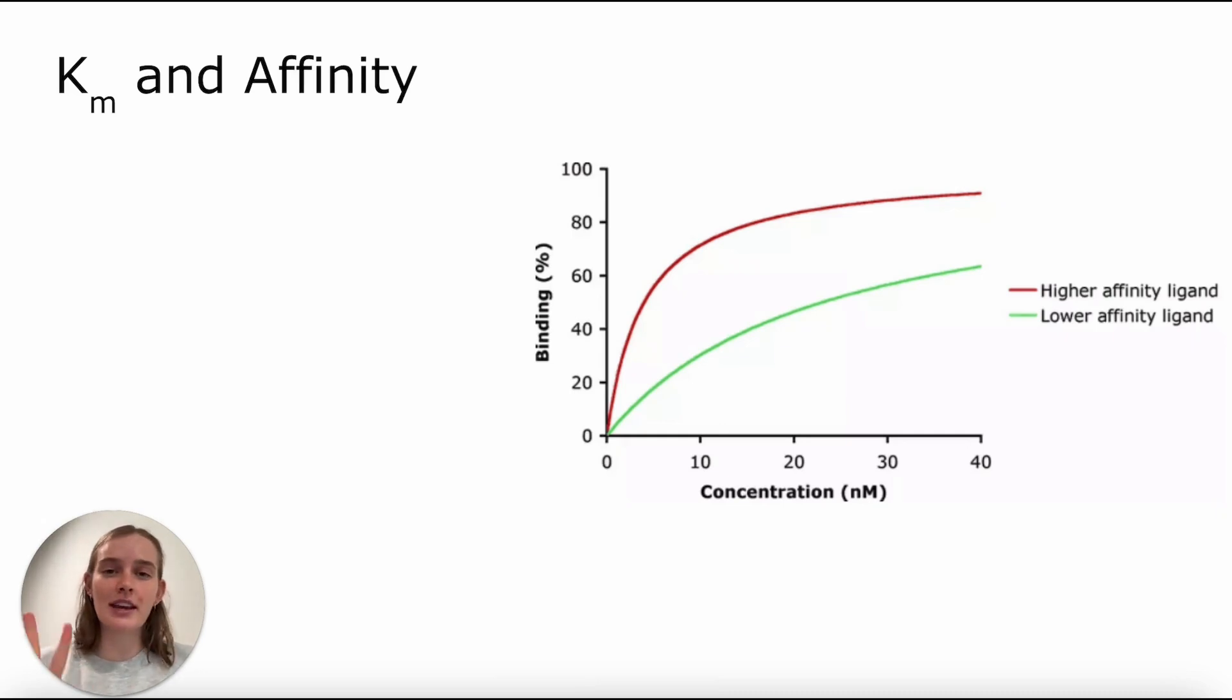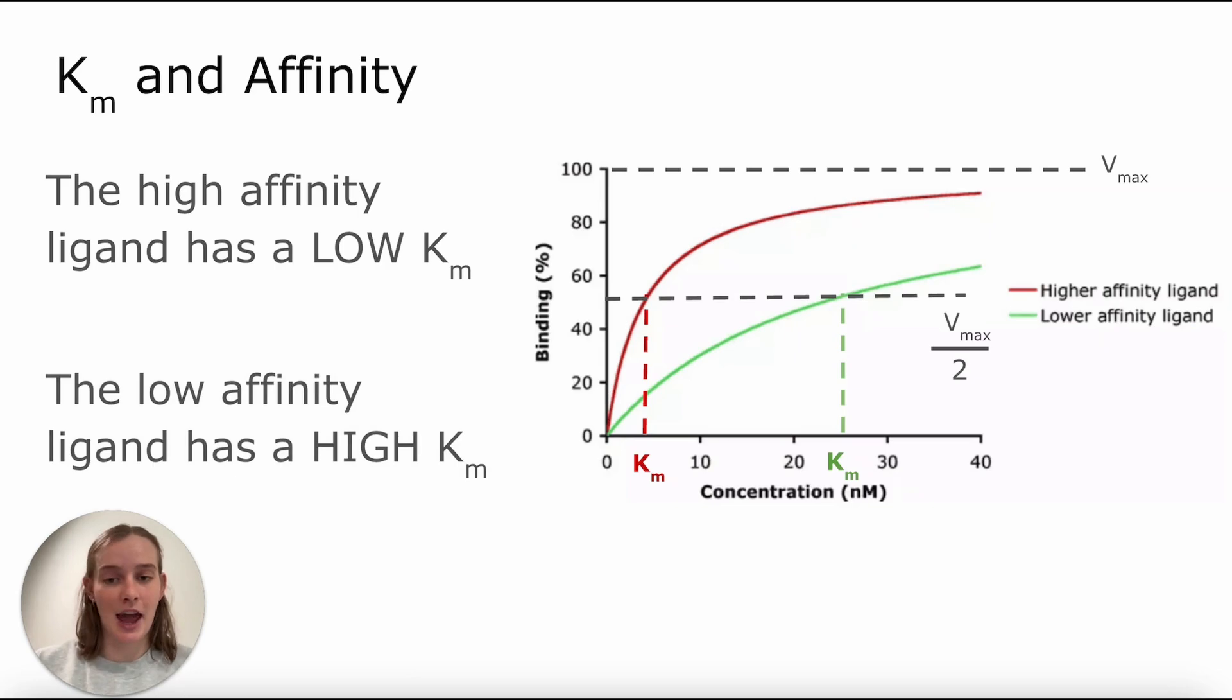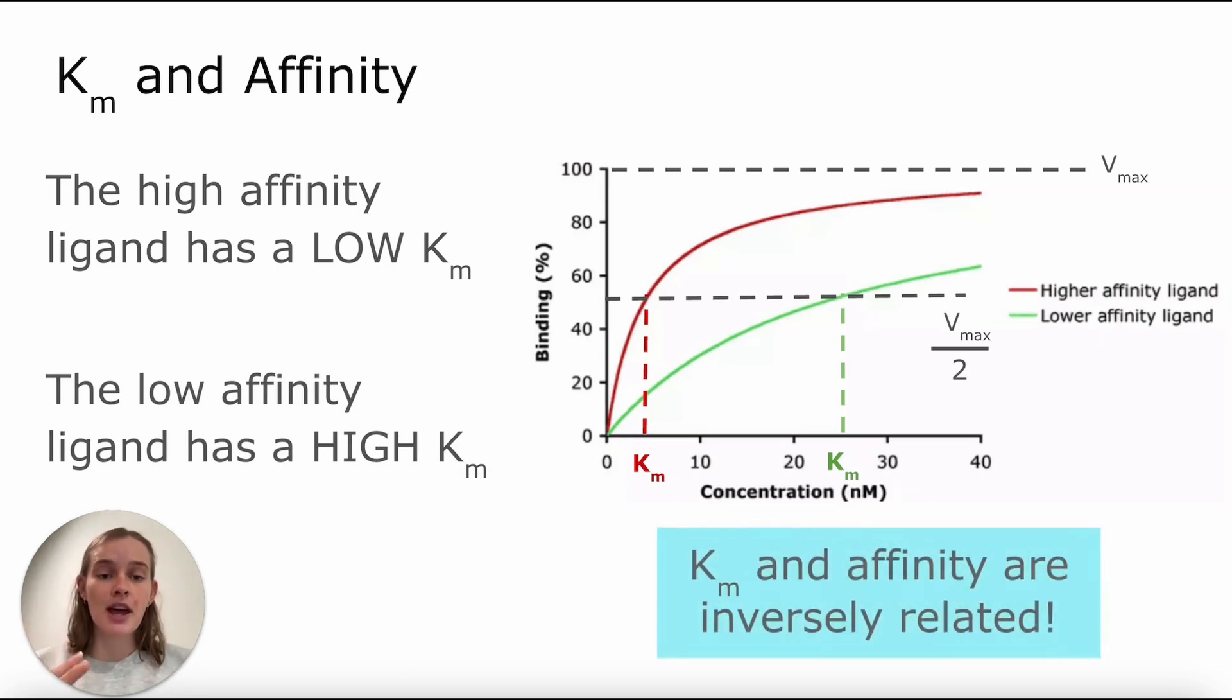Next thing we're going to talk about is stay in this Km area, but relate Km to affinity, and how well a ligand might bind an enzyme. To demonstrate this, we're going to look at our graph that we have over here on the right and define our Vmax as the 100% binding. That would mean that half of our Vmax would be at 50% binding. What you can see is that our high affinity ligand actually has a low Km. It takes less substrate to reach half of Vmax compared to the low affinity ligand in green, which has a high Km. So we can see through this relationship that Km and affinity are actually inversely related to one another.